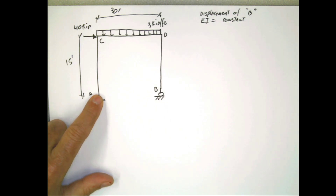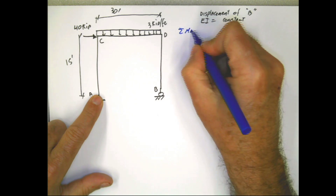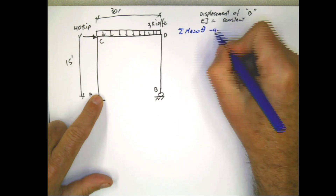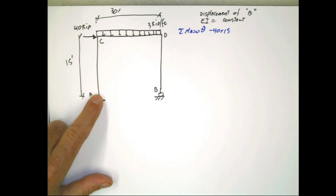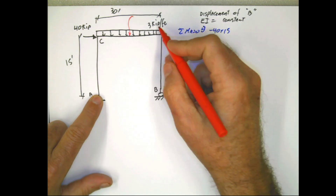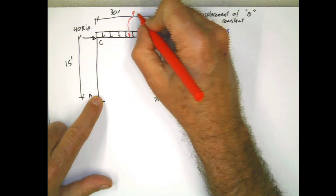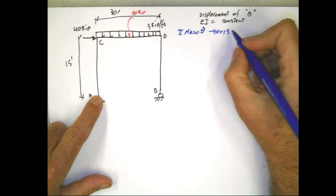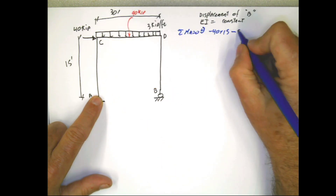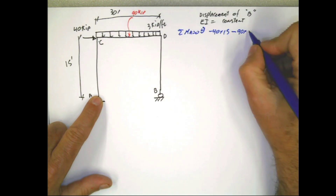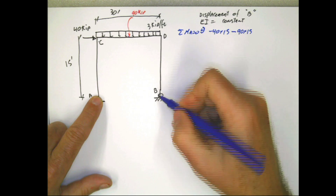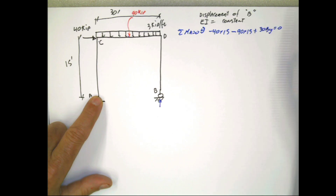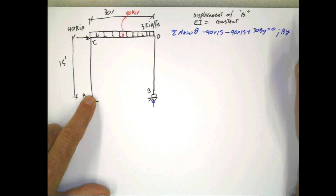I shouldn't be doing this at this level, but I'm going to do it. Summation of moments at A equals zero. You have negative 40 times 15. Then you have the equivalent force of 90 kip produced by the distributed load, negative 90 times 15, acting at the center. Plus 30·By equals zero. So By equals 65 kip.